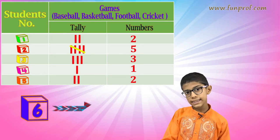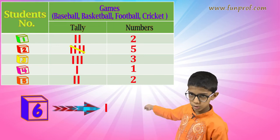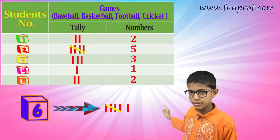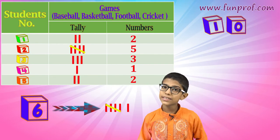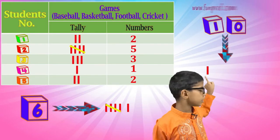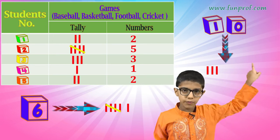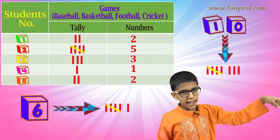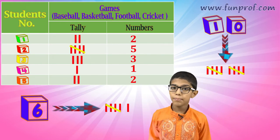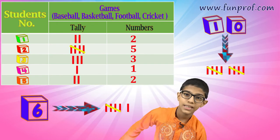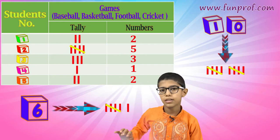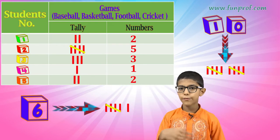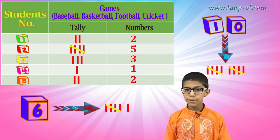How do you represent 6 in tally? You write 1, 2, 3, 4, 5 — a group of five with a cut — and then 1 more. If it's 10, you write 1, 2, 3, 4, 5 cut, then 1, 2, 3, 4, 5 cut. The cut doesn't mean we remove it — we keep it. Each group of five lines with a cut represents 5, and counts go in multiples of 5.